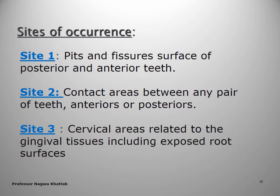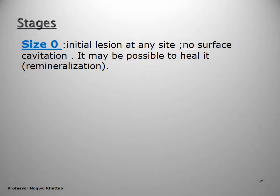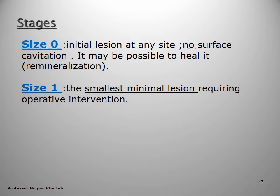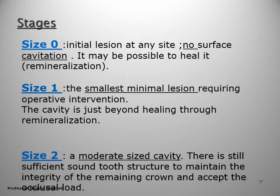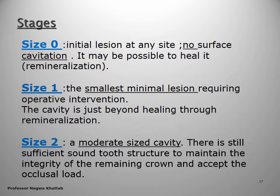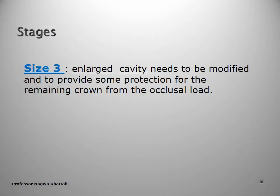Site one is pits and fissure surfaces of posterior and anterior teeth; site two is contact areas; site three is cervical areas. Stage zero is initial caries lesion with no cavitation. Stage one is the smallest manual lesion requiring active intervention. Stage two is a moderate-sized cavity where there is still sufficient sound tooth structure to maintain crown integrity and accept occlusal load. Stage three is a large cavity needing modification to provide protection for the remaining crown from occlusal load.